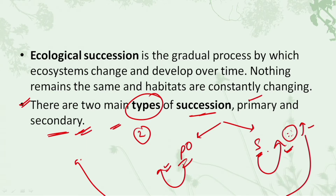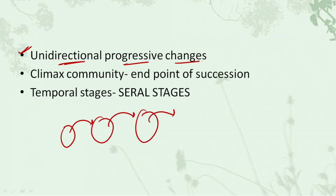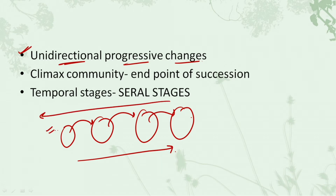We will discuss primary and secondary succession in detail shortly. But before that, to summarize: ecological succession is a unidirectional progressive change. That is, if a change occurs in the community of a particular area leading to the formation of new communities, this change cannot be reversed back to the primary stage. Hence it is unidirectional. And why progressive? Because there are some progressions occurring in this particular community.